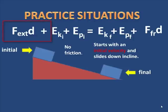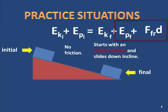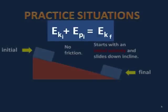In this situation, there isn't any external work being added, so we don't need it in the equation. There is initial kinetic energy and there is an initial potential energy, but the potential at the end is zero, and there's no friction, therefore no work against friction. The total energy at the beginning — kinetic plus potential — is all converted into final kinetic energy.